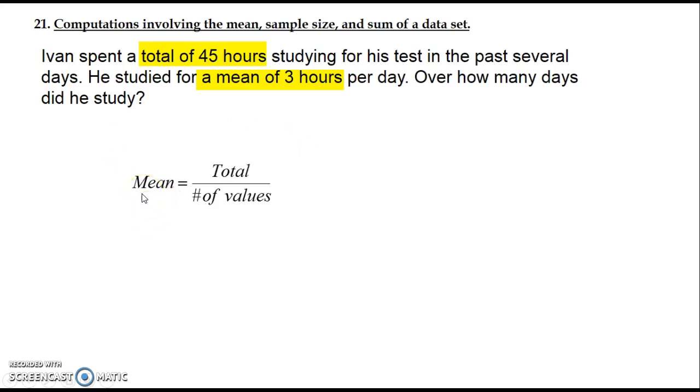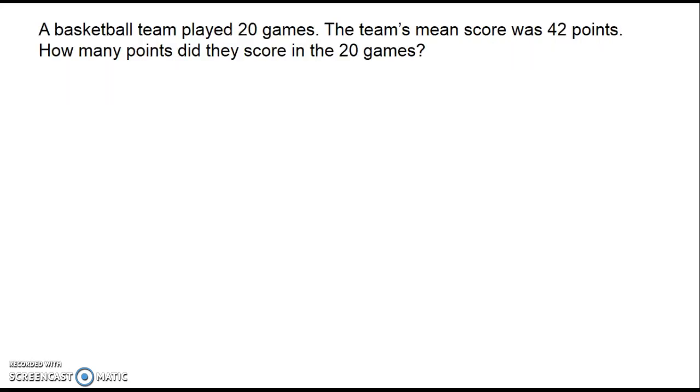And you've already learned that the mean is the total divided by the number of values. So fill in the information you know. The mean is 3, the total is 45, and we need to calculate the number of days. So we multiply both sides of the equation by x, divide by 3, and we know that Ivan studied for a total of 15 days. Let's look at another example.